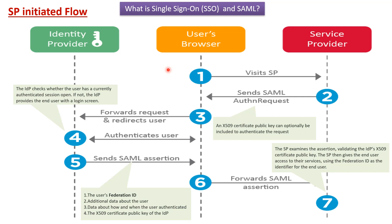If the session is not open, the IDP provides the end user with a login screen. The end user enters their username and password and sends those credentials to the identity provider. The IDP checks whether the credentials are valid. If valid, the IDP generates a SAML assertion and sends it to the user's browser — that is the fifth step. The SAML assertion contains the user's federation ID, which is the user's email ID, additional data about the user, data about how and when the user was authenticated, and the X.509 certificate public key of the IDP.